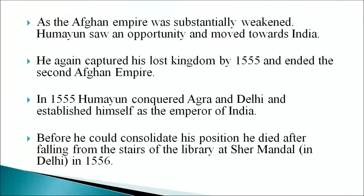While besieging the fort of Kalinjar, Sher Shah died in 1545 in an accidental blast of gunpowder. He was succeeded by his son Islam Shah, who had to face conflicts with his brother Adil Khan and many Afghan nobles. As the Afghan empire was substantially weakened, Humayun saw an opportunity and moved towards India. He again captured his lost kingdom by 1555 and ended the Second Afghan Empire. In 1555, Humayun conquered Agra and Delhi and established himself as the emperor of India.